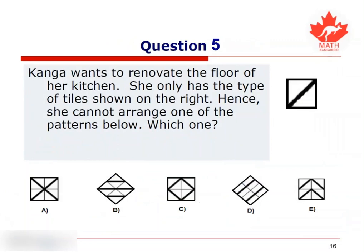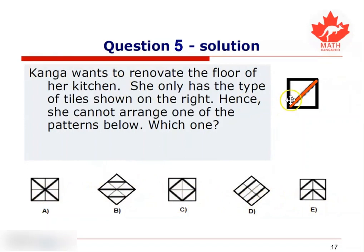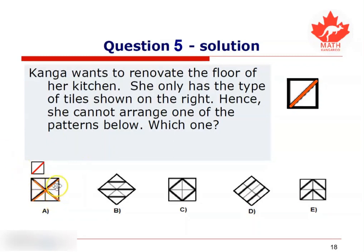Here is question 5. Kanga wants to renovate the floor of her kitchen. She only has the type of tiles shown on the right. Hence, she cannot arrange one of the patterns below — which one? Notice that the tile that Kanga has has a line going from one corner to the opposite corner. So through a process of elimination, we'll see which of these patterns cannot be obtained by Kanga. The first section of pattern one has a line going from one corner to the opposite corner, which fits exactly the tile that Kanga has. The second, third, and fourth sections will all be obtainable by using Kanga's tile. So therefore the first pattern is obtainable by Kanga, and it is not the answer we're looking for.